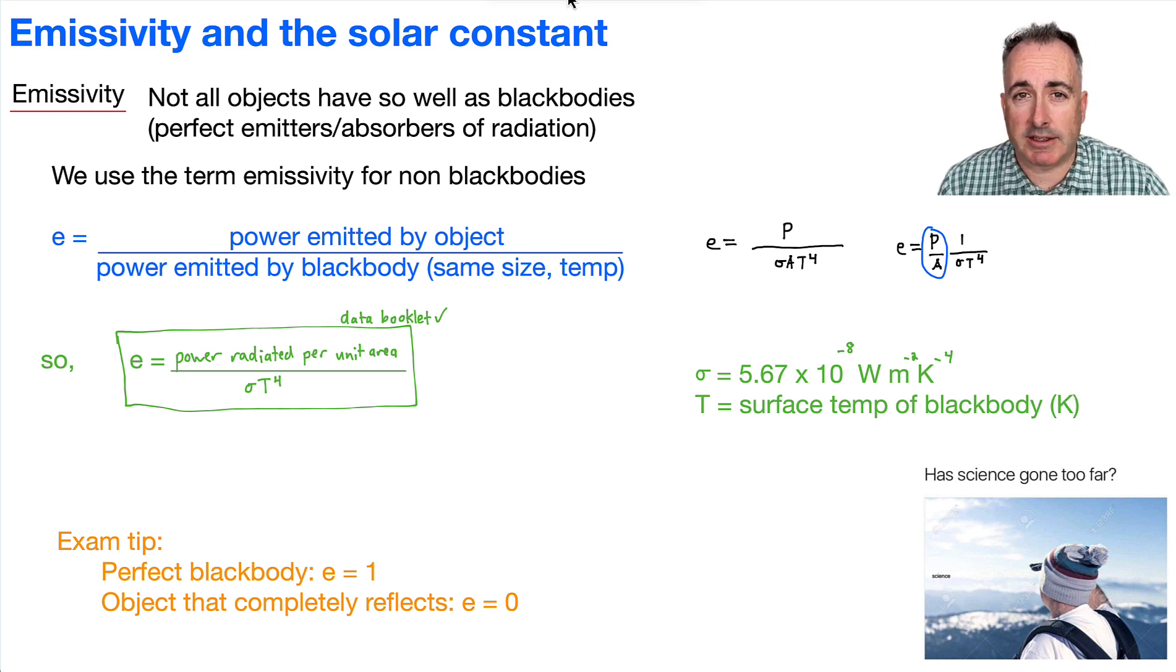Now, a nice little exam tip I think for you is just knowing, what about emissivity? So if something is a perfect black body, that must mean that the power radiated must be equal to exactly the same as what it would be from the black body. So that means you'd be dividing the same number by itself, so that would be a one. So that's a perfect black body, of course. And then if it acts the opposite, so something that completely reflects, emissivity then will be zero.